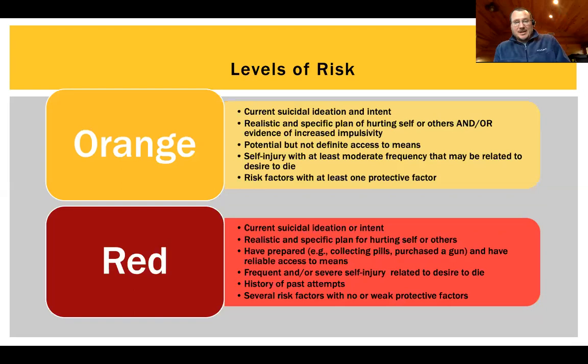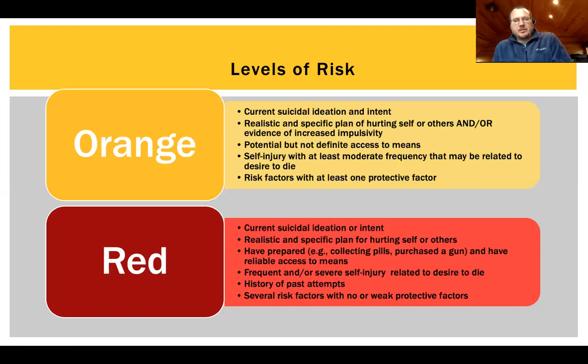Orange is the next step up — current suicidal ideation or intent, maybe a specific plan, and/or evidence of behavioral impulsivity. Not self-reported impulsivity, but evidence of impulsive behavior. Potential access to means related to the plan and other lethal means. There could be self-injury with moderate frequency where there's ambivalence about desire to die, with risk factors but still some protective factors.